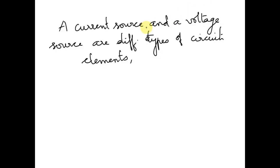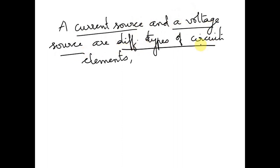Hello students! The statement you provided is not accurate. A current source and a voltage source are different types of circuit elements.